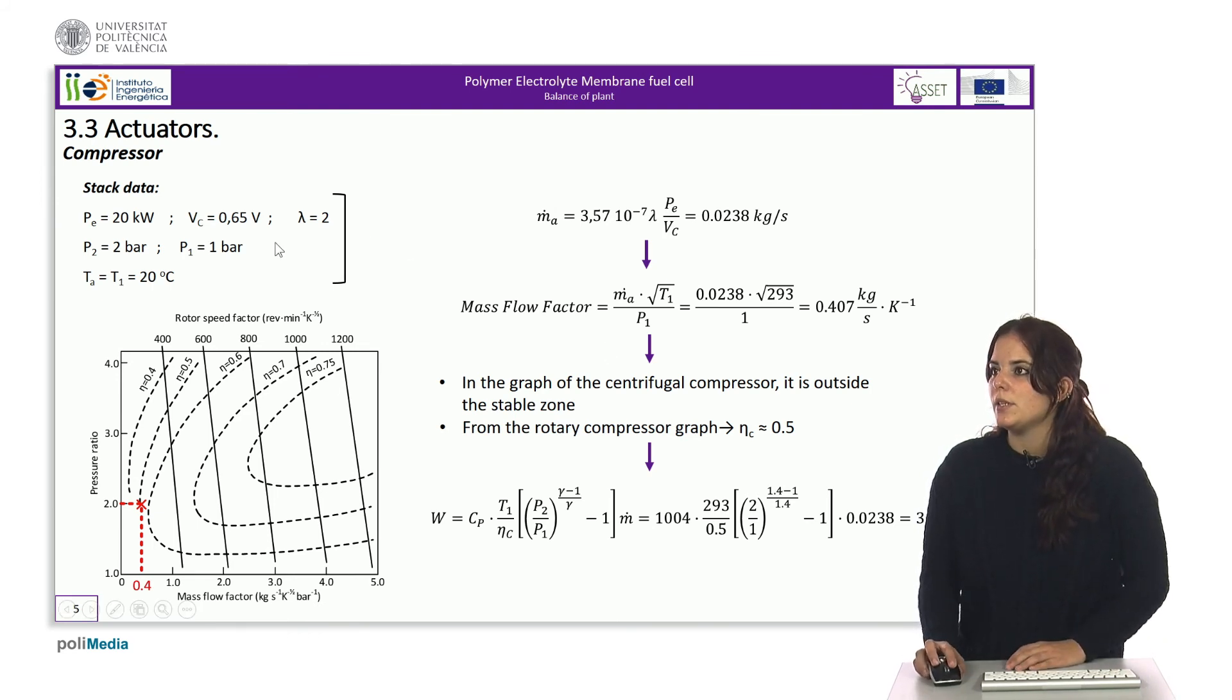The air temperature is 20 degrees Celsius. Firstly, using the expression obtained when dealing with the water management of the PEM fuel cell, it is possible to calculate the mass of air that the compressor will have to move.